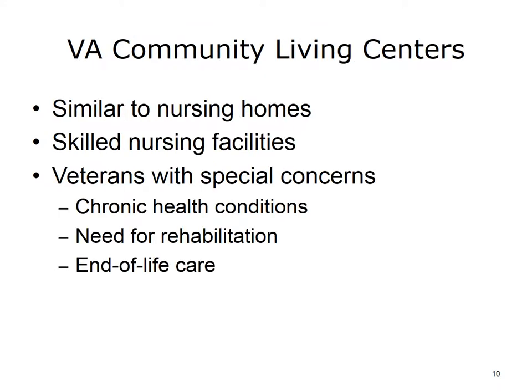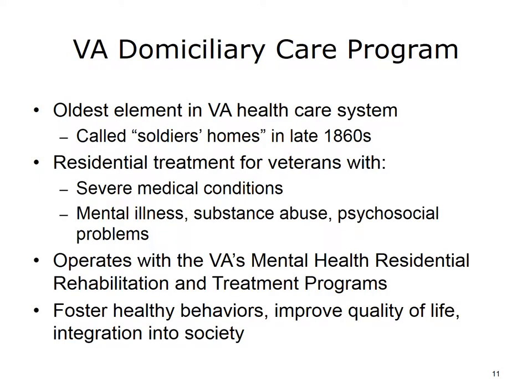Community living centers are nursing homes for veterans. Skilled nursing care is available for veterans with chronic conditions such as dementia, those who need rehabilitation services, and those nearing the end of life. The domiciliary care program is the oldest health component in the VA system. It was established after the Civil War in the late 1860s, when facilities called soldiers' homes began to provide care and housing for disabled and poor veterans. VA domiciliaries are residences that provide treatment and rehabilitation for veterans with severe medical conditions, mental illness, substance abuse disorders, or other psychosocial problems. The domiciliary care program operates together with the VA's mental health residential rehabilitation and treatment programs, which aim to foster healthy behaviors in a safe living environment, improve quality of life, and help veterans participate in their communities.